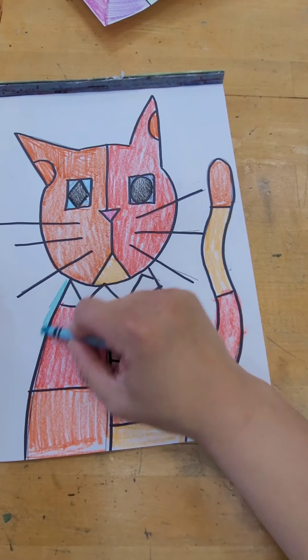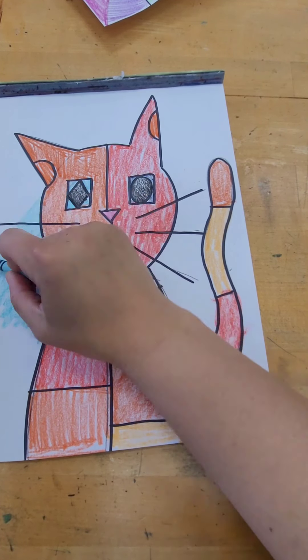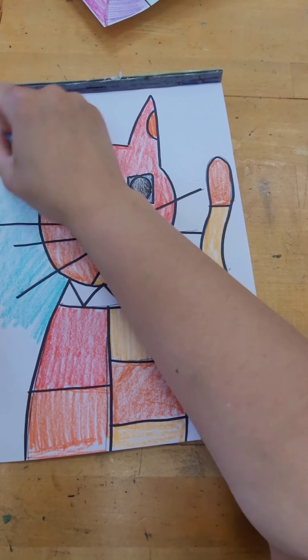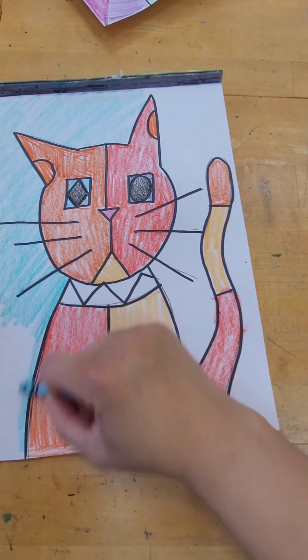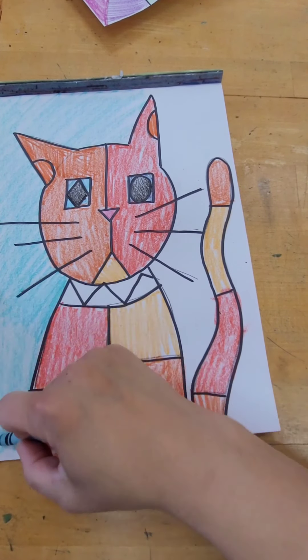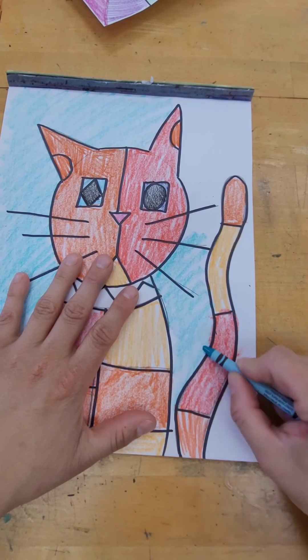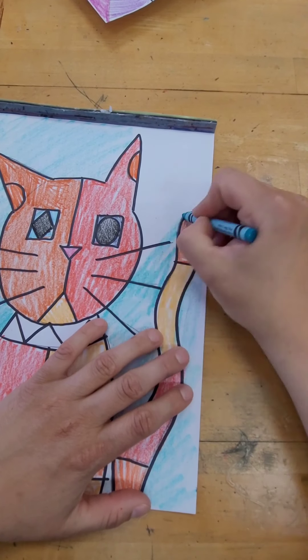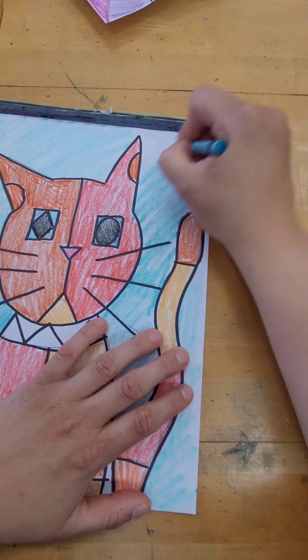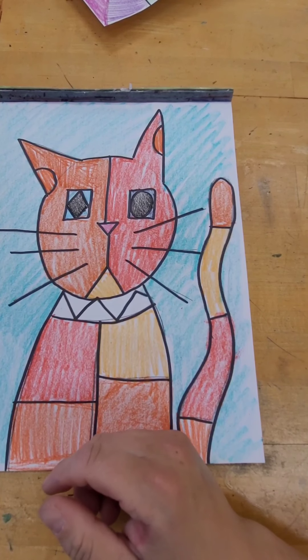I think I'm going to do blue for my background, and then I haven't forgot that. I'm going to do green for his collar. I'm going to do blue for my collar.